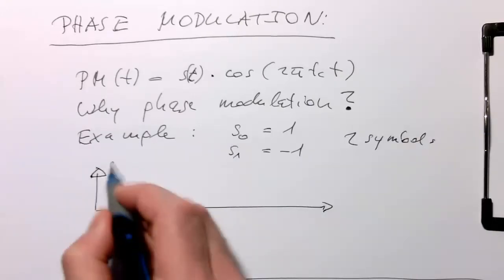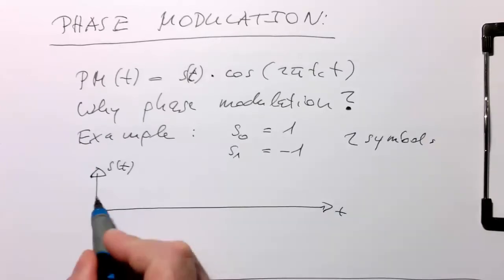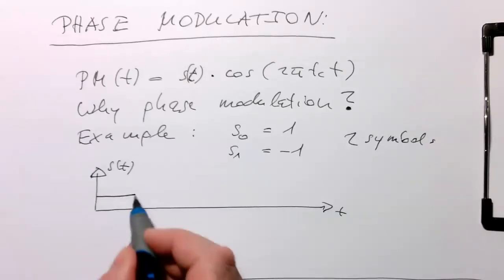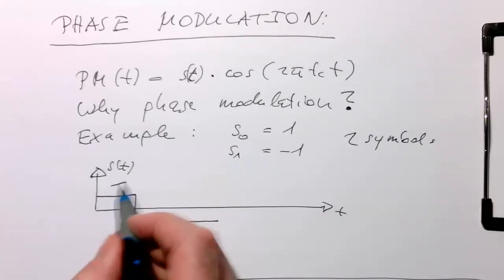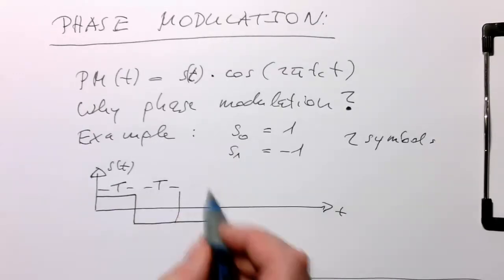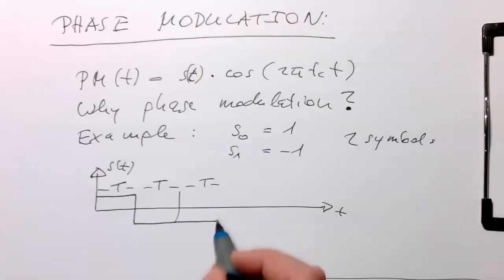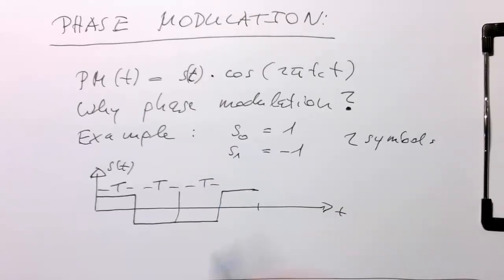Imagine we've got a symbol stream. That's our S(t) and t. Here we've got the S0 symbol and then we've got here the S1 symbol. As we know, this is here, lasts T. Let's have it last for another T here and another T here. Then we switch it back up to this level and so on.